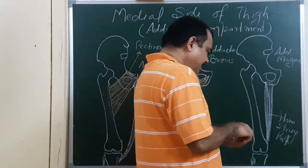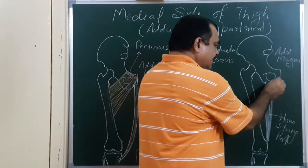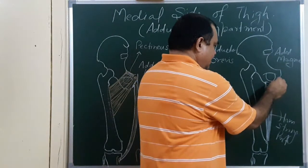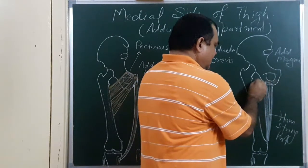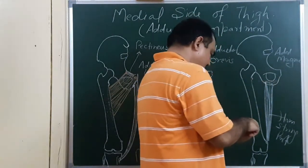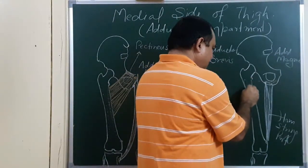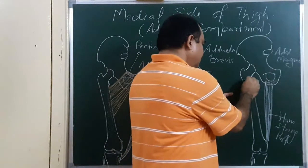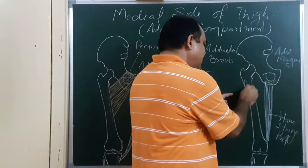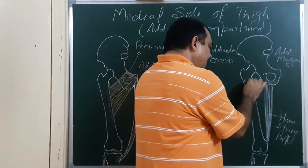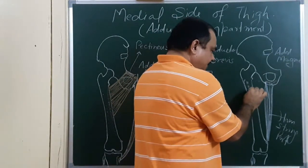Another part, it takes origin from here, ischiopubic ramus. It inserted on, on posterior side there is gluteal tuberosity, this is gluteal tuberosity present on posterior side. So it is inserted on the medial border of this gluteal tuberosity.